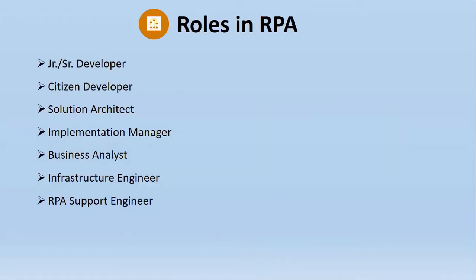There are a lot of roles in RPA. Developers is a low-code role, but citizen developer is totally a no-code thing, so it's very easy to learn and become one. We also have solution architect, which requires coding and architecture knowledge. Then there's implementation manager, which requires a little bit of coding knowledge. Business analyst is on the business front with no code knowledge. Infrastructure engineer looks after infra, and support engineer needs programming knowledge to fix bugs in production. We would be focusing on the citizen developer role.